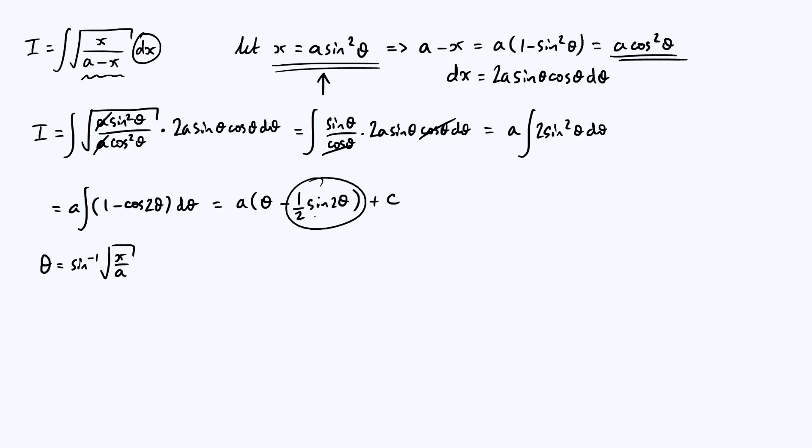What about this half sine 2 theta? Well, here's where we're going to have to use yet another trig identity. So we know from a double angle formulae that half sine of 2 theta is sine theta times cos theta. Sine theta, we can get an expression for from our definition of x in terms of theta, because sine theta is just the square root of x over a.